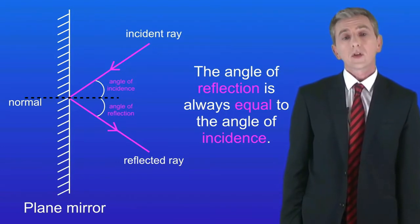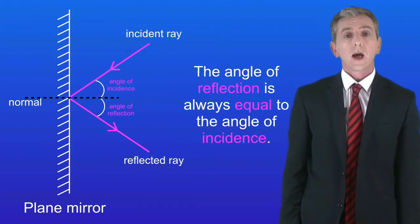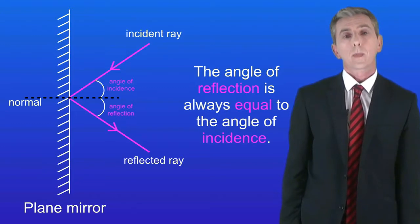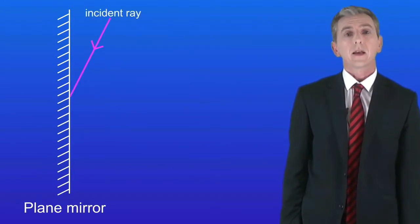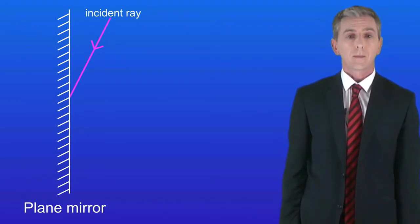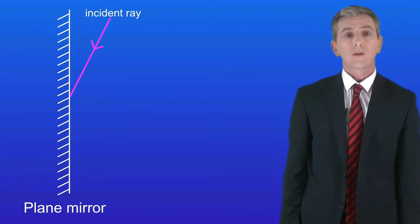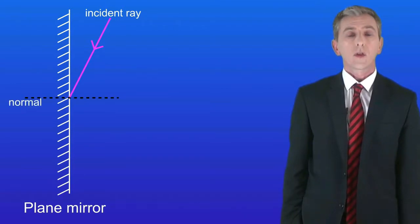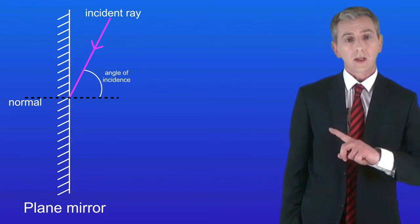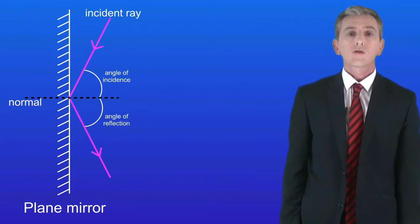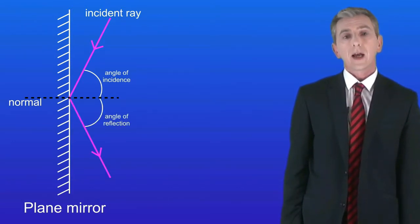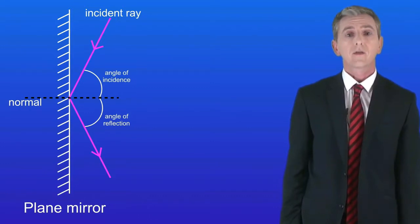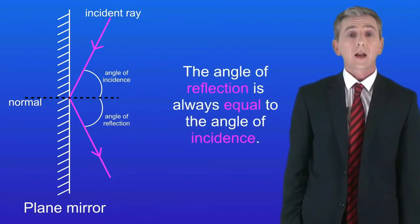I know that this can look a bit difficult, but it's not as tricky as it looks. Here's a plane mirror and a ray of light hitting it — the incident ray. First we draw the normal at right angles to the mirror, then work out the angle of incidence. We then draw the reflected ray so that the angle of reflection is the same as the angle of incidence. Remember: the angle of reflection is always equal to the angle of incidence.